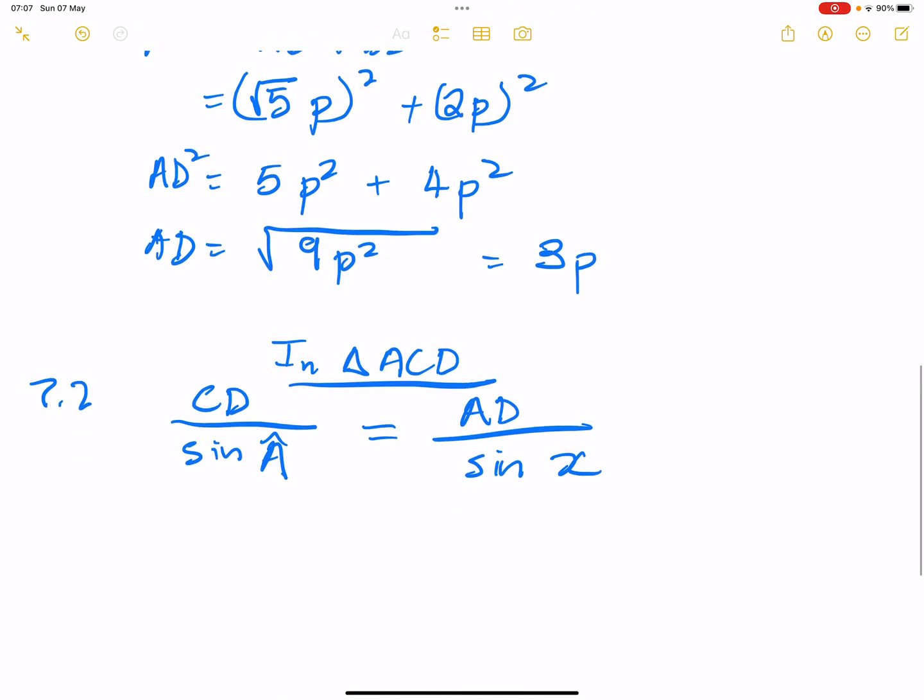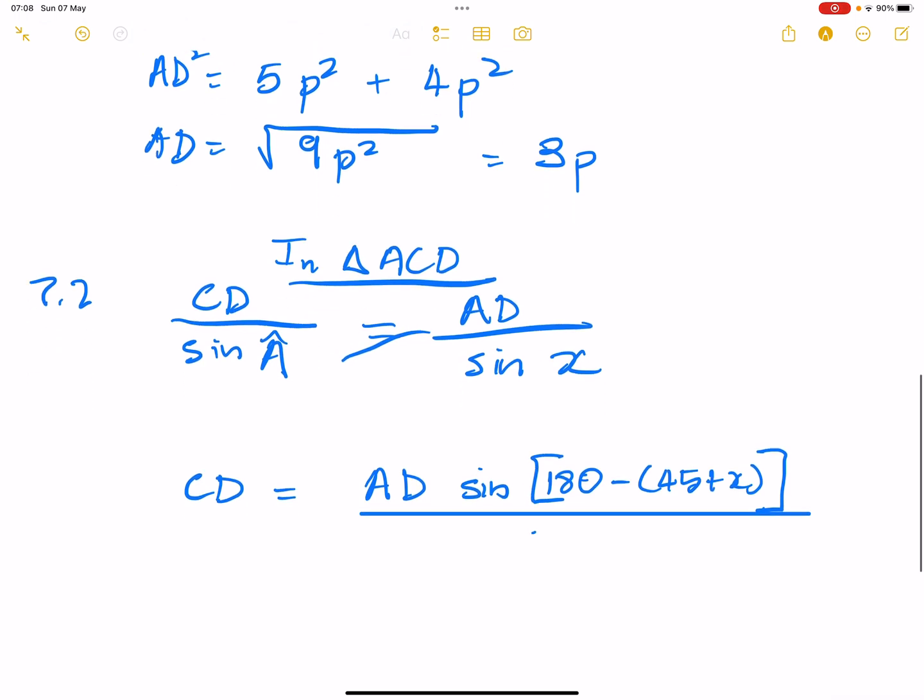So this is equal to, so the side that we know, the side that we just found, that's going to be side AD, over in this case the sine of the angle that's opposite there, and we said that's angle C, which is equal to X. So I'm going to say CD would be equal to, if we cross multiply, that's going to be AD multiplied by sine of, now remember A, we said that's 180 minus 45 plus X, divided by the sine of X.